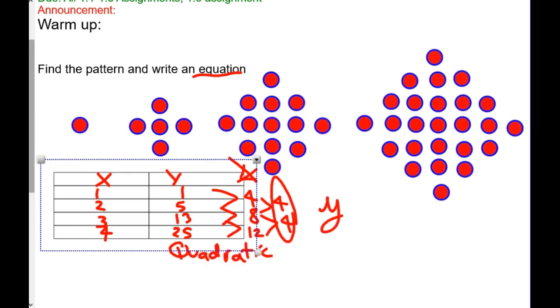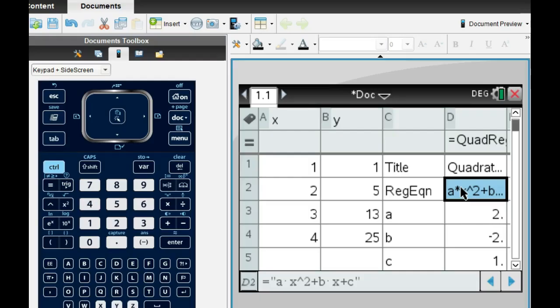Awesome, you're so smart. Now what you do is you plug it into your calculator like this, and you get your a, b, and your c. That's where we're at right now.